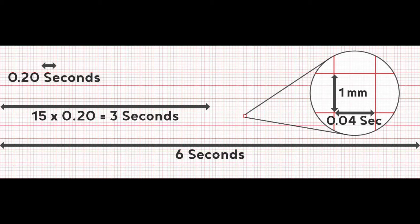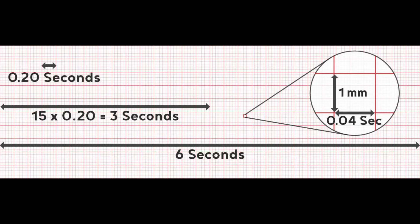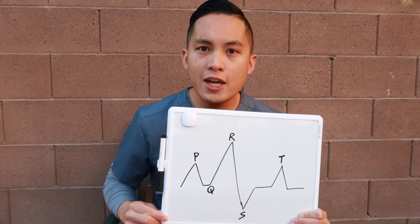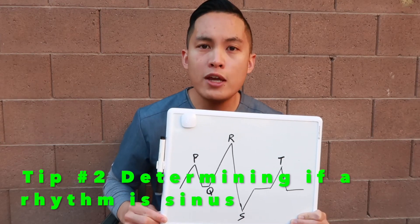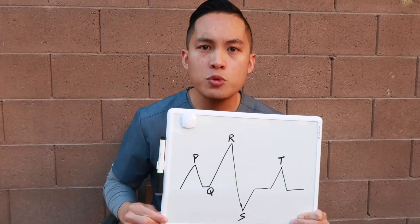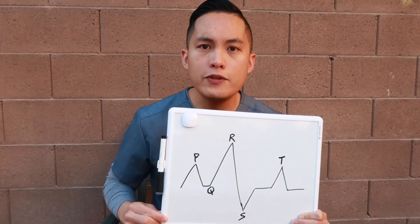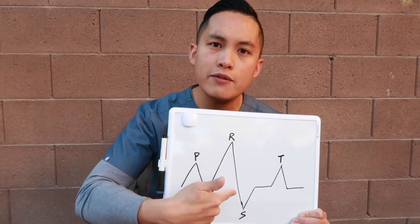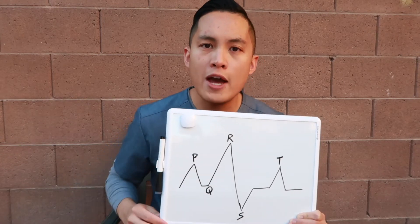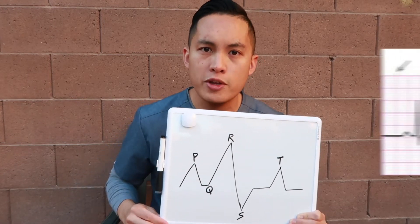15 big boxes is equal to 3 seconds, meaning there is a total of 30 big boxes in a 6-second strip. When looking at an EKG strip, the first thing I look for is a P-wave and a QRS-wave. If you notice that a P-wave is preceding the QRS-wave, you know you have a sinus rhythm.